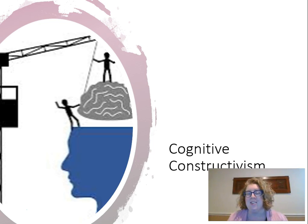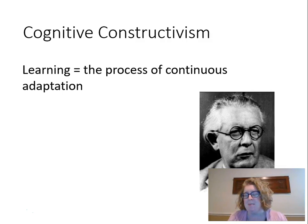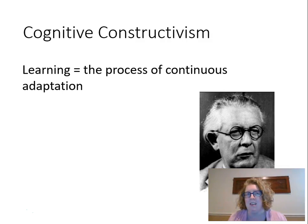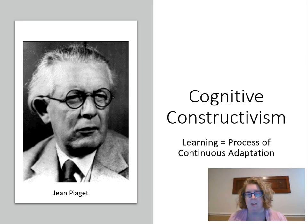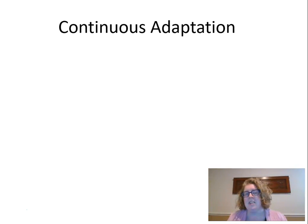Now we'll move on to constructivism — there are two types: cognitive and social constructivism. When we think about cognitive constructivism, the big name is Piaget. He's really thinking about the process of continuous adaptation. He was a developmental psychologist, so he's thinking about learning as a developmental process — this idea of continuous adaptation.